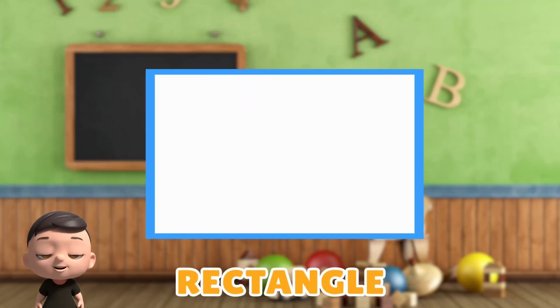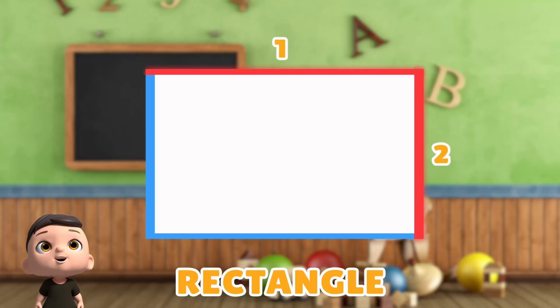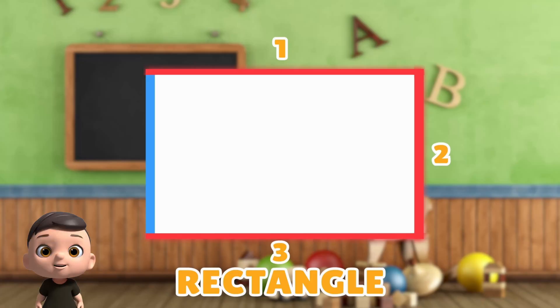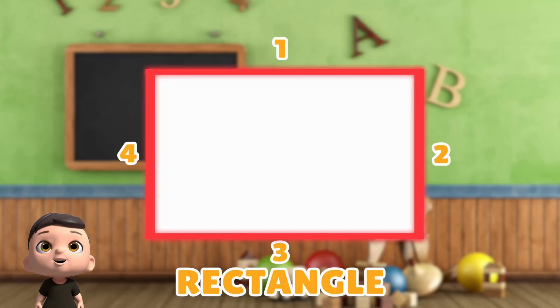This is a rectangle. Let's see how many sides a rectangle has. 1, 2, 3, 4. Rectangle has 4 sides.